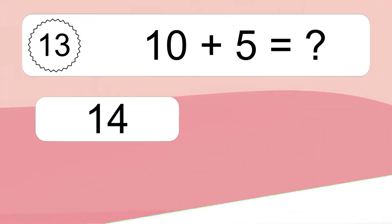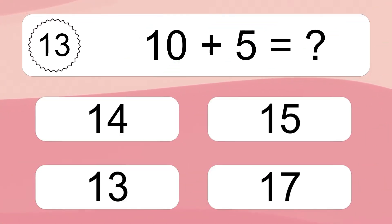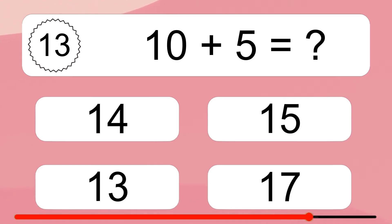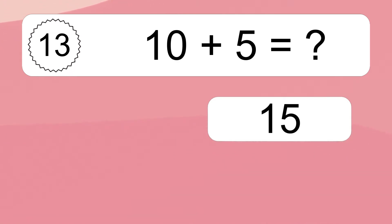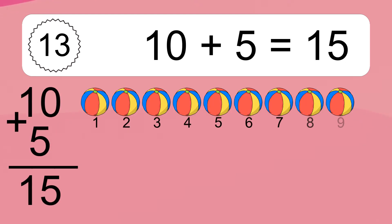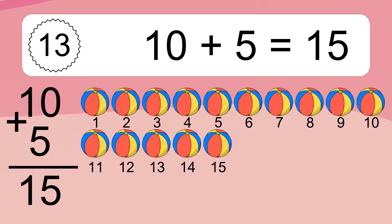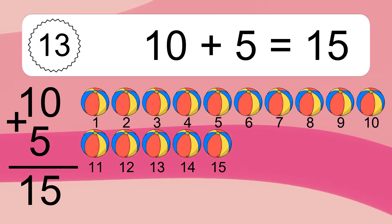10 plus 5 equals what? 10 plus 5 equals 15. Let's count it. 1, 2, 3, 4, 5, 6, 7, 8, 9, 10, 11, 12, 13, 14, 15.